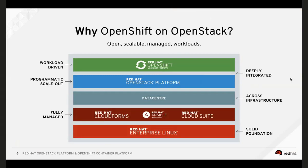OpenShift uses VXLAN tunnels to communicate containers, and OpenStack does the same with Neutron. Since we want OpenStack to host containers in VMs and bare metal, we needed a way to avoid the double encapsulation — a container going through both the OpenShift VXLAN tunnel and the OpenStack VXLAN tunnel. Kuryr solves this issue and is an important part of the optimizations we are doing with this integration.